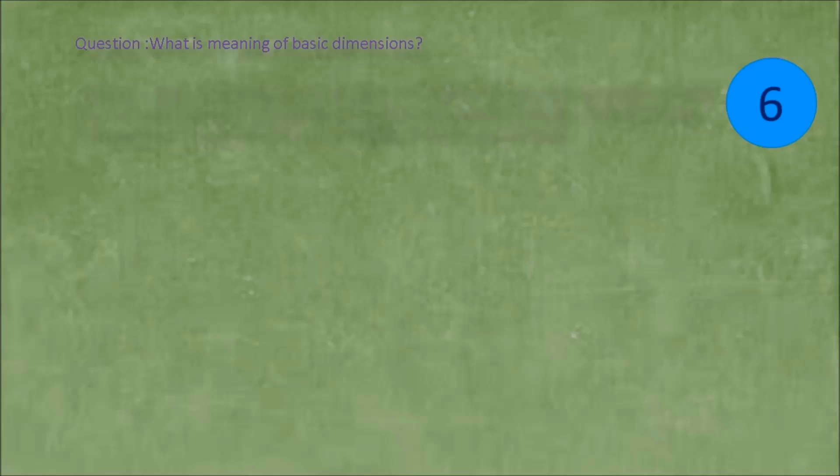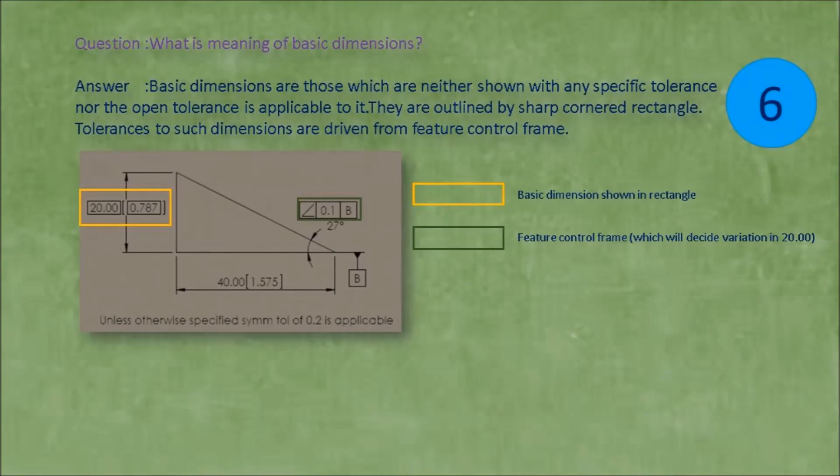Question: What is meaning of basic dimensions? Answer: Basic dimensions are those which are neither shown with any specific tolerance, nor the open tolerance is applicable to it. They are outlined by sharp cornered rectangle. Tolerances to such dimensions are driven from feature control frame.